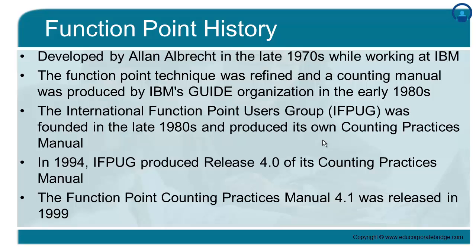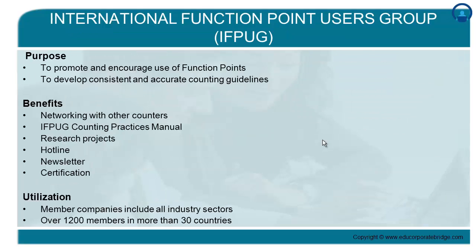In 1994, IFPUG produced Release 4.0 of its counting practices manual. The Function Point Counting Practices Manual 4.1 was released in 1999, and this is the current version of the IFPUG-based Function Point Counting Practices Manual. The International Function Point Users Group, IFPUG, is an international body that works extensively on function point based software estimation guidelines.